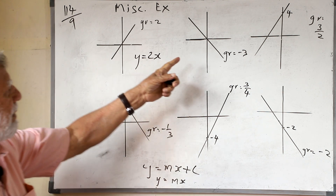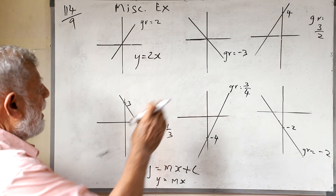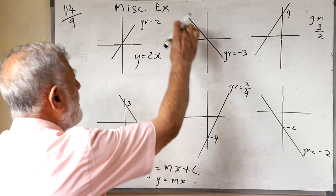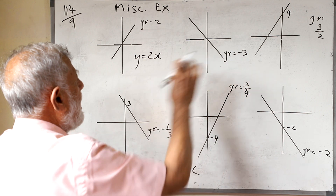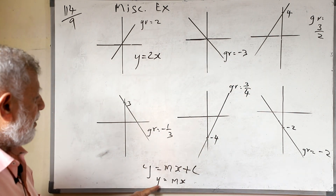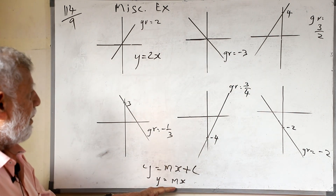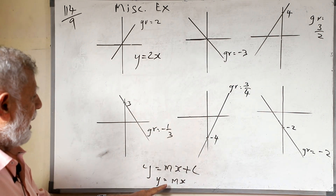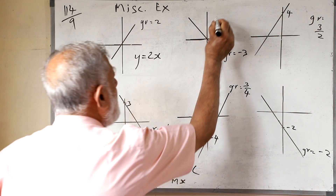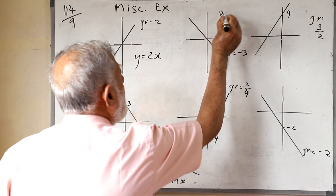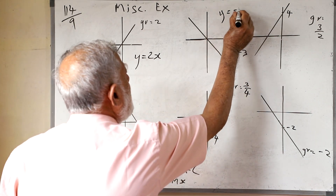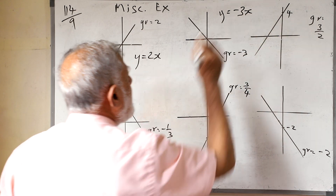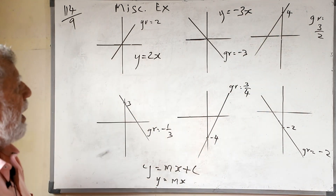Now if you look at the second one, they are given the gradient as minus 3 and it is also going through 0. So using the formula y = mx, the gradient is minus 3, so the equation of this line is y = -3x.